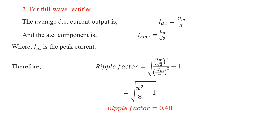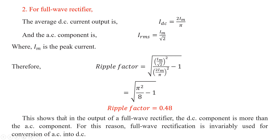Calculating √(π²/8 − 1) gives a ripple factor of 0.48, meaning only 48% of the output is AC. This is why the full wave rectifier is preferred for the conversion of AC into DC. In summary, the ripple factor for the half wave rectifier is 1.21, whereas the ripple factor for the full wave rectifier is 0.48.